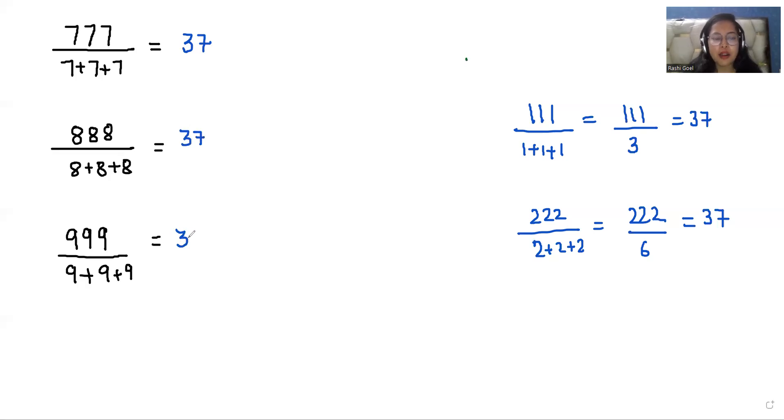These are the magical numbers. If we can see anywhere, we can simply write our answer as 37.